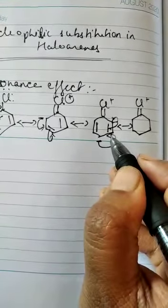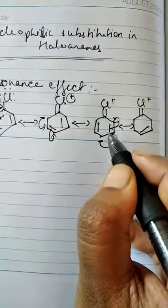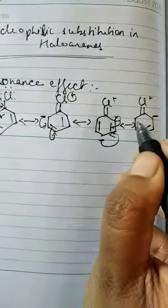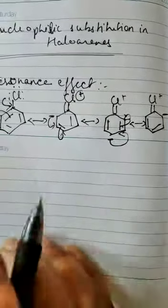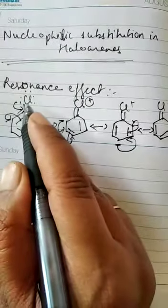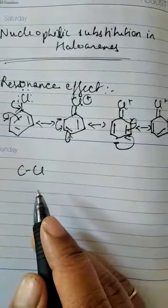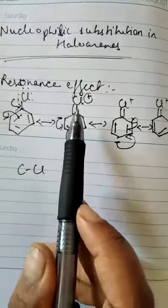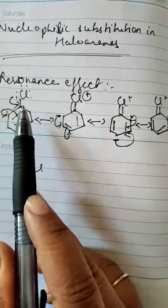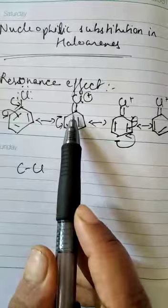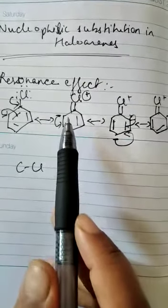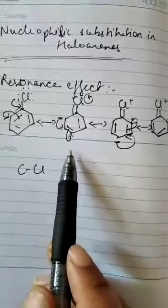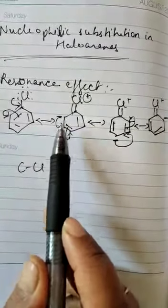This electron shift gives a double bond here; the bonded electrons shifted to the next carbon atom, leaving a negative charge there. As you can see, the C–Cl bond acquires a partial double bond character due to the resonance effect. Because of this resonance, the carbon–chlorine bond, which was a single bond, now has double bond character. As a result, bond cleavage in haloarenes is more difficult than in haloalkanes, and therefore haloarenes are less reactive towards nucleophilic substitution.